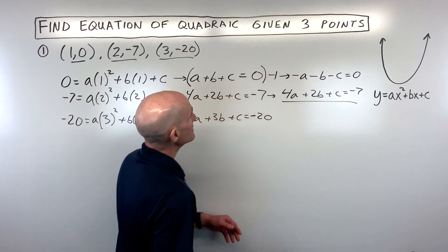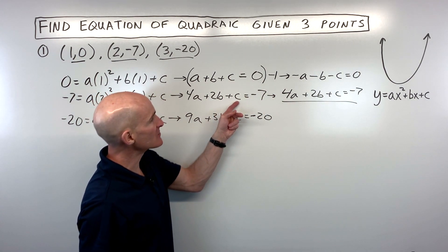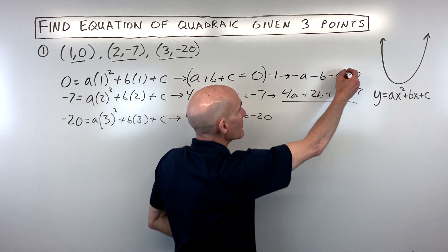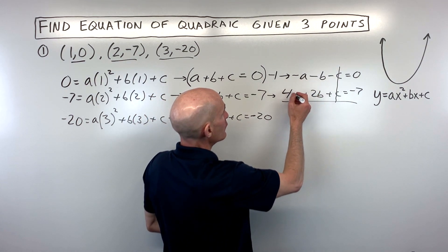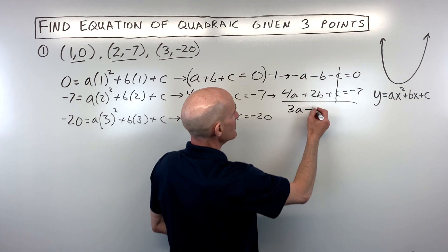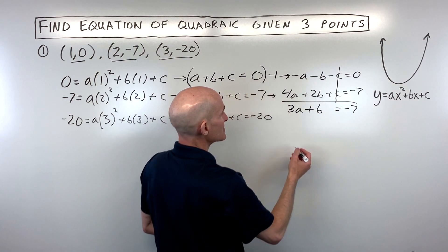So the reason I did that, multiply everything by negative one, is because if this is negative c and this is positive c, then when we add these equations together, what's going to happen to the c's? They're going to cancel out, right? So negative one a plus four a is three a, two b plus negative b is one b, and zero plus negative seven is negative seven.